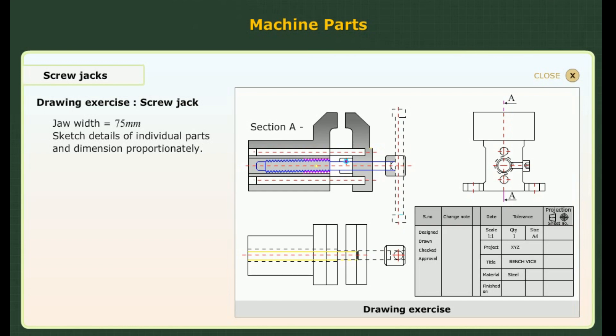The figure shows a bench vise where the clamping force is applied by a power screw. Assuming that the jaw width is 75 mm, sketch details of individual parts and dimension proportionately.